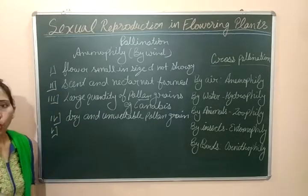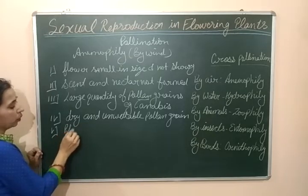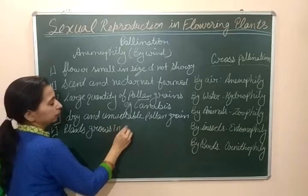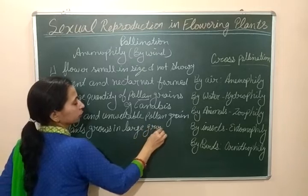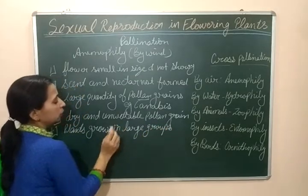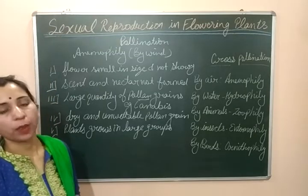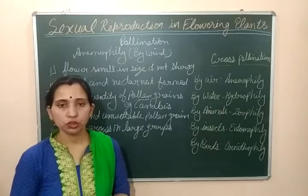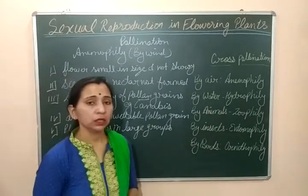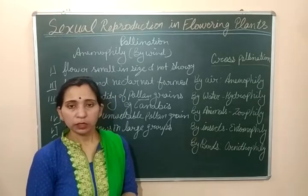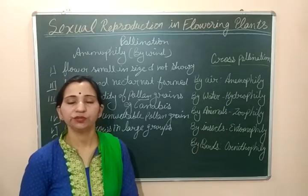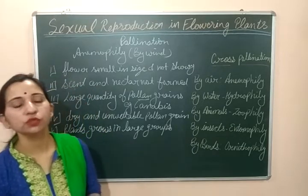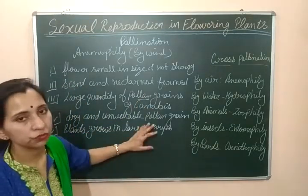The fifth characteristic is that plants grow in large groups. The flowers which support anemophily grow in such a manner that many plants are present in a group, and the groups are also very large in number. This ensures that pollen grains carried by air can be received by nearby stigmas. If plants are too far apart, chances of pollen reaching a stigma decrease. Growing in groups increases the chances of successful pollination.